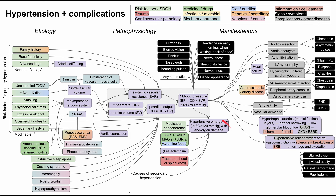Many presentations of hypertensive emergency involve end-organ damage similar to chronic hypertension. Aortic dissection can occur acutely — suspect it if a patient with very high blood pressure suddenly develops chest pain and asymmetric pulses. Heart failure with flash pulmonary edema can develop acutely, counting as cardiac end-organ damage. Myocardial infarction can also result from hypertensive emergency — if a patient has chest pain and diaphoresis with very high blood pressure, suspect MI.